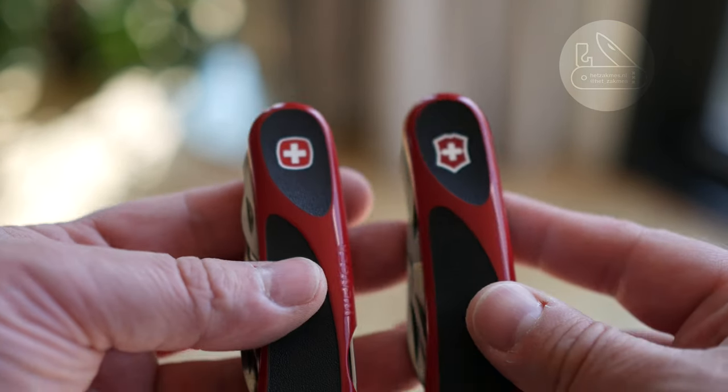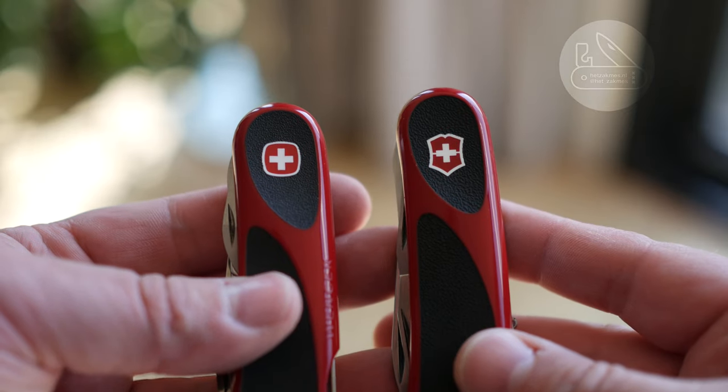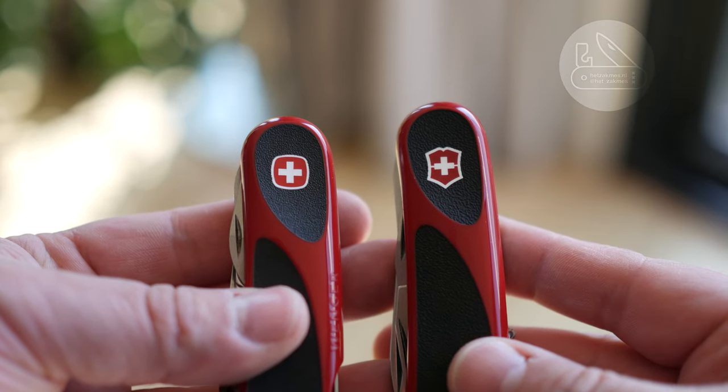Hey guys, this is Paid of the Pocketknife Project, and this is my new Wenger EVO Grip number 16. And next to it is the Victorinox version of it.